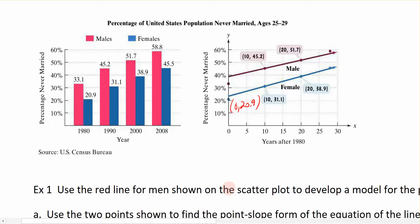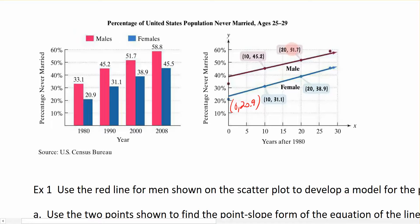We're going to look at a question dealing with the men. You can see there are four points listed on the graph for males. Because I have points on the graph, I can create an equation that models what the data is doing. For example, the point (10, 45.2) represents 1990 — which is 10 years after 1980 — with a percentage of 45.2% of males never married.